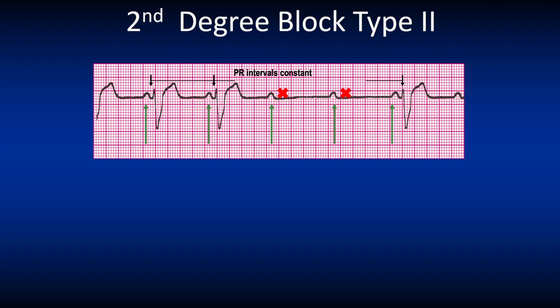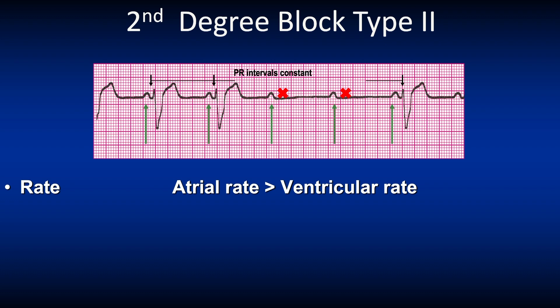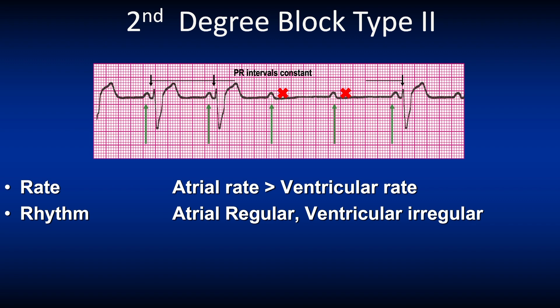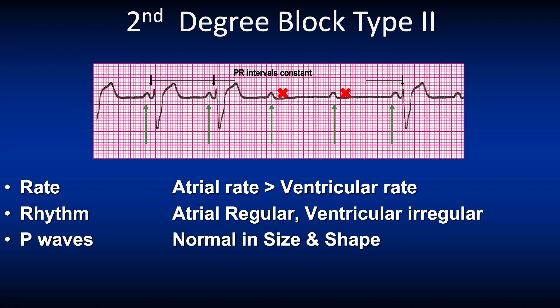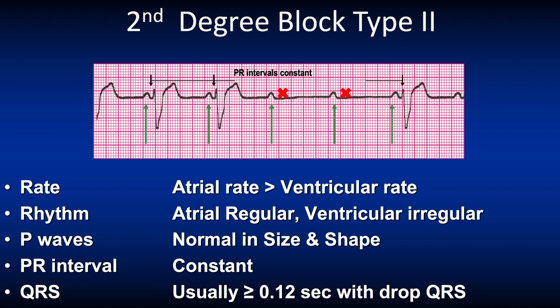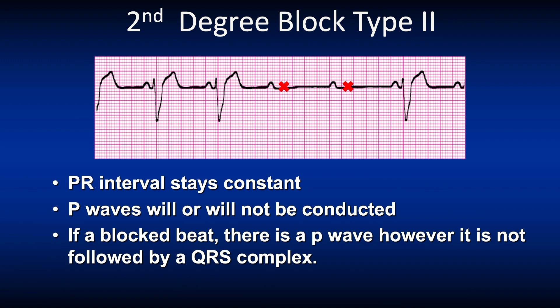Here we see a second degree block type 2. The atrial rate is more than the ventricular rate. The atrial rhythm is regular versus the ventricular rhythm, which is irregular, as there are dropped beats. The P waves are normal in size and shape, and you'll find more P waves than QRS complexes. The PR interval is usually within normal limits but can be prolonged, and it stays constant until there's a P wave without a QRS complex. The QRS is usually three small boxes or more, with some dropped QRS complexes. On this ECG we see two P waves without a QRS complex. The key to remember is that the PR interval will stay constant until you have a P wave without a QRS complex.